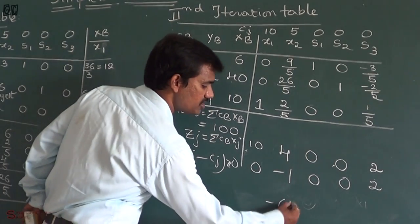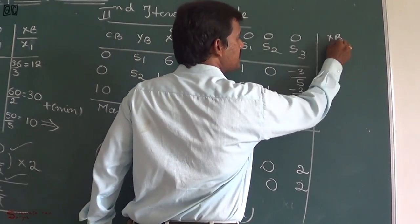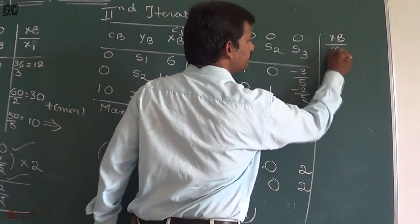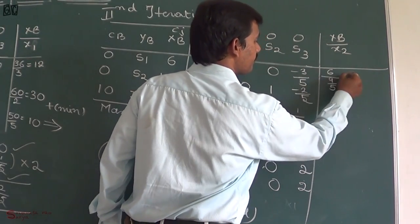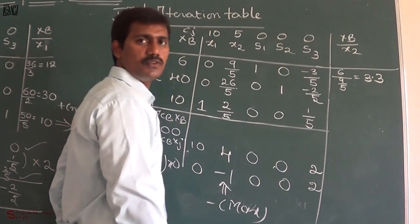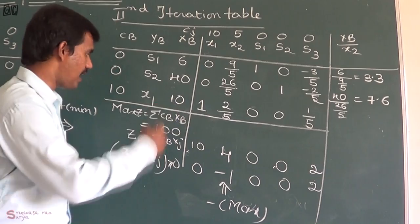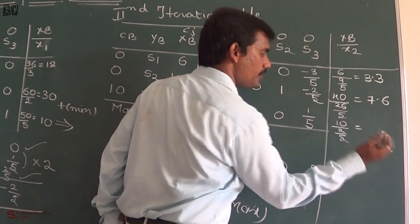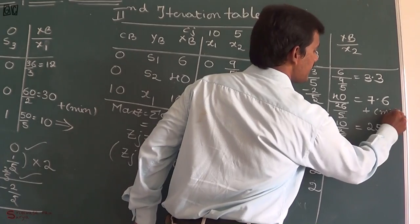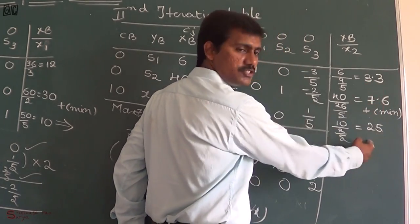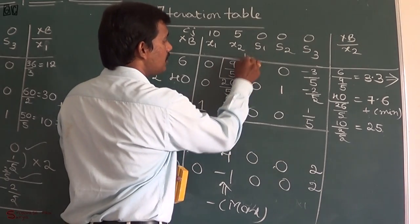We take the minus of maximum: there is only one negative value, minus 1. Now apply the minimum ratio rule: xb divided by x2. The ratios are 6/(9/5)=3.3, 40/(26/5)=7.6, and 10/(2/5)=25. The minimum is 3.3, so the key element is 9/5 in row 1. x2 is the incoming vector and s1 is the outgoing vector.